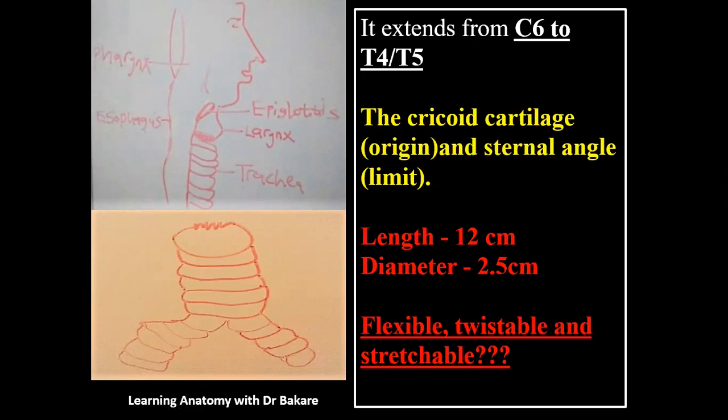The trachea presents a form of flexibility — it tends to be twistable and stretchable. This can be attributed to its structural components, because what the trachea is made up of allows it to present this same form of flexibility.